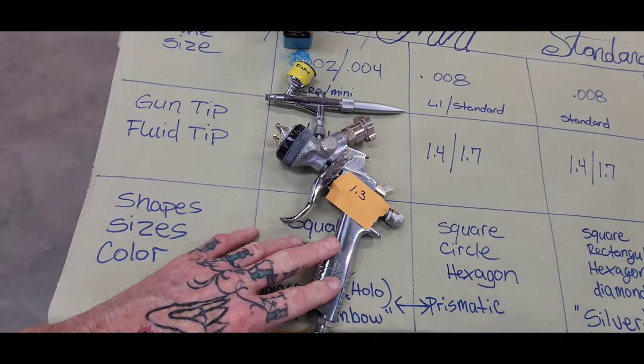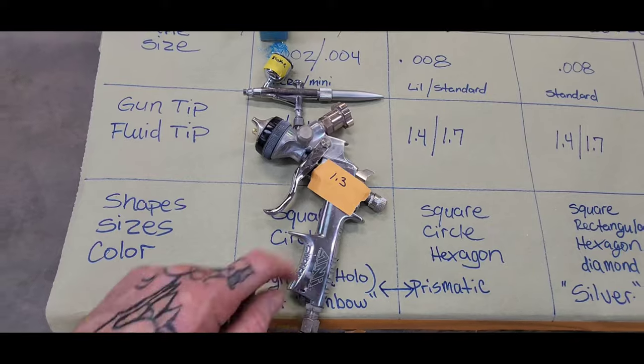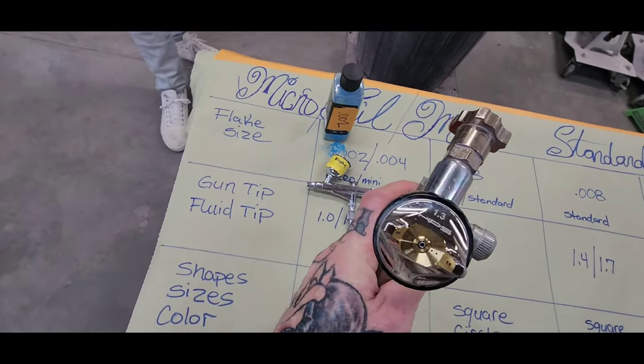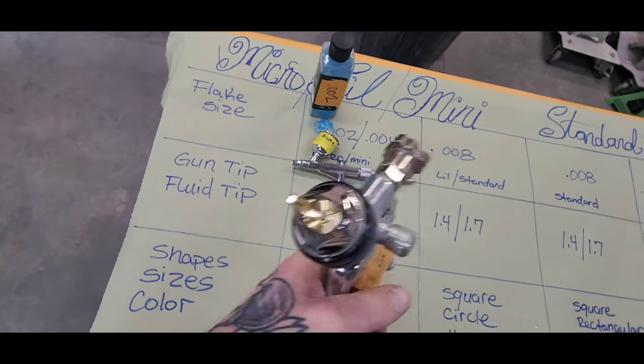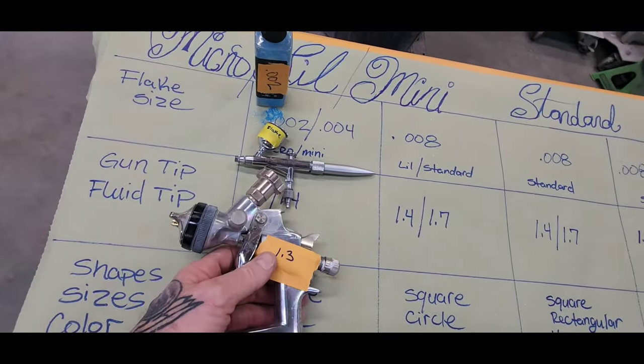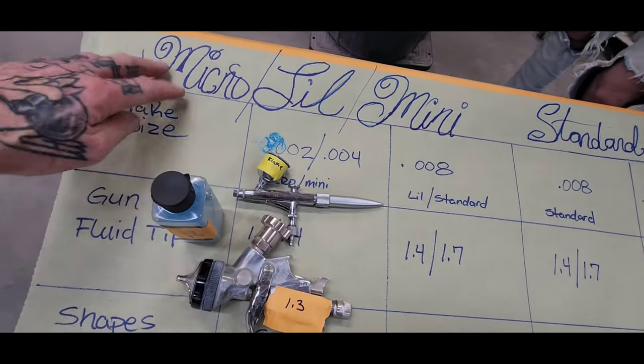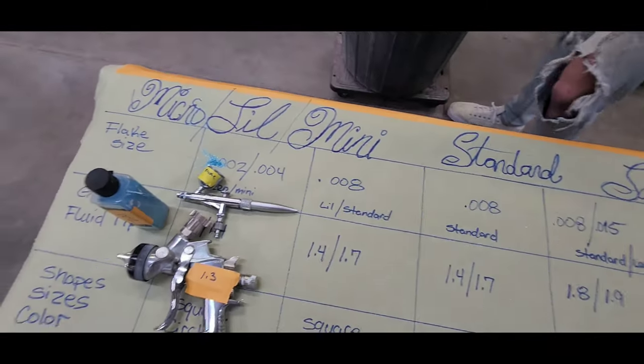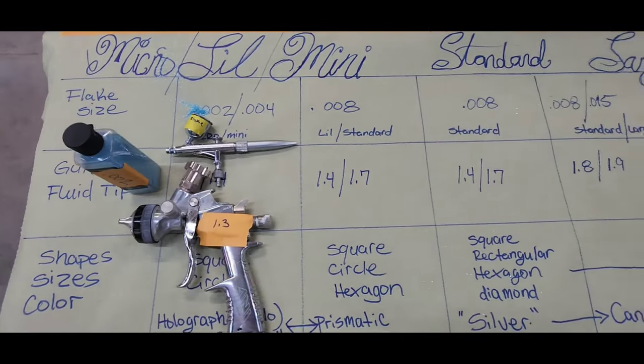So also, you can run this flake inside a standard gun too. So this gun here, I use it mainly for flakes. This is an anti-silver with a 1.3 in it. You can use this gun for base coats, clear coats, primers. But you can run a .004 flake through it with no problems. Those will be Micro, Lil, or Minis.